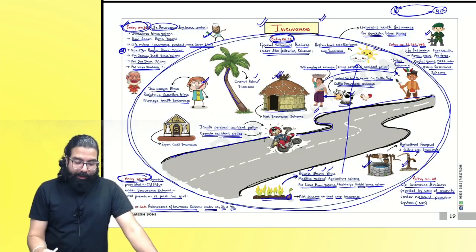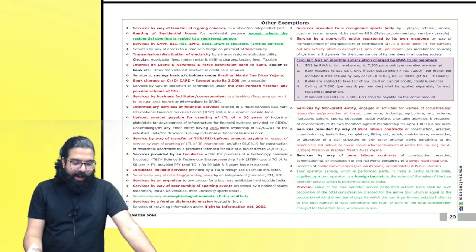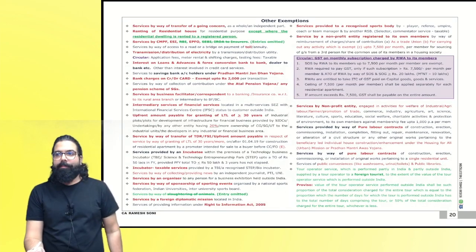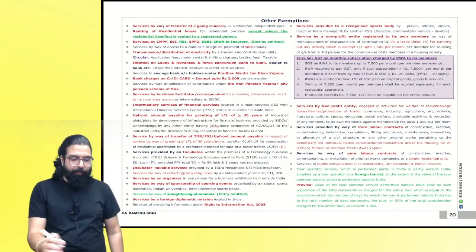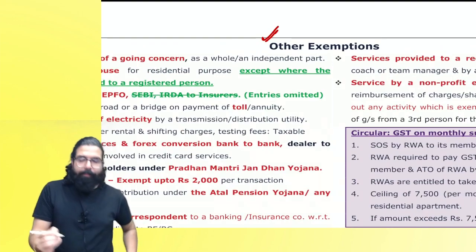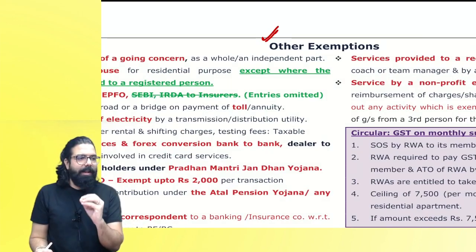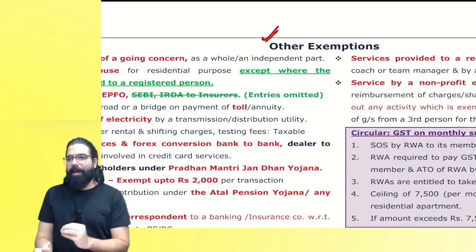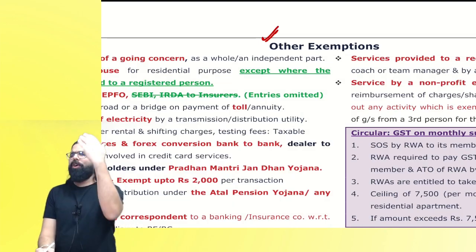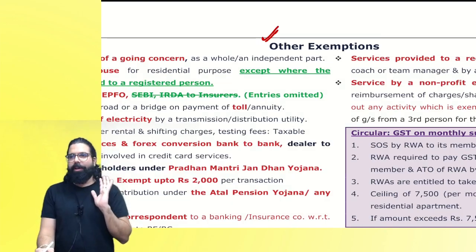Let's go ahead and see the next chart. The next chart in our chapter of exemption is other exemptions. What I've done is whatever miscellaneous exemptions were there, which were not covered in the other chart, I've covered here.